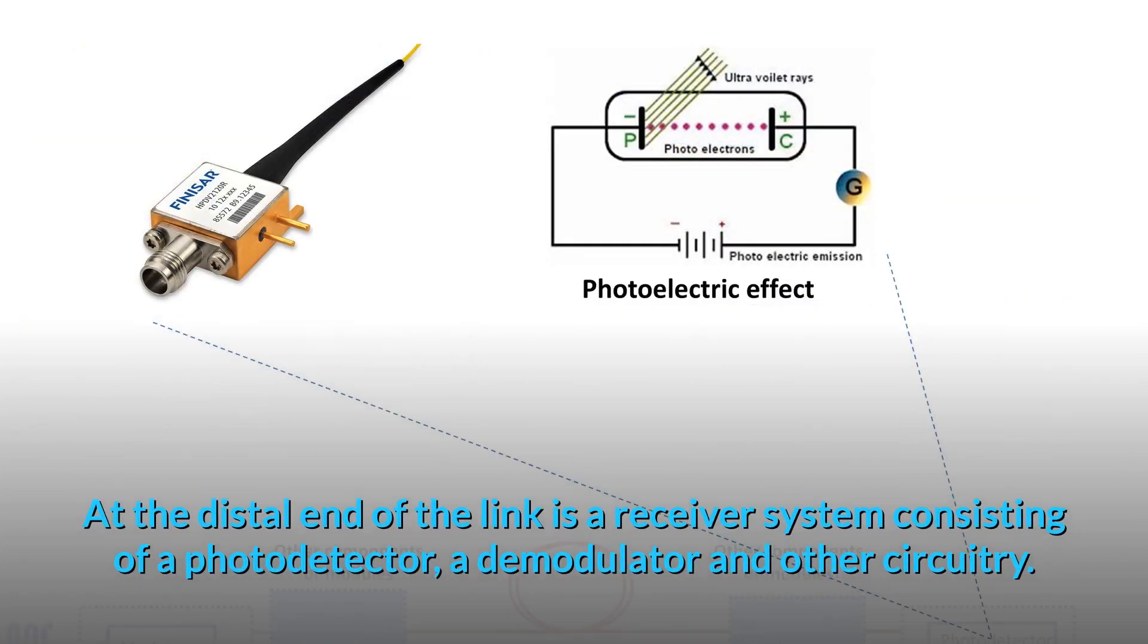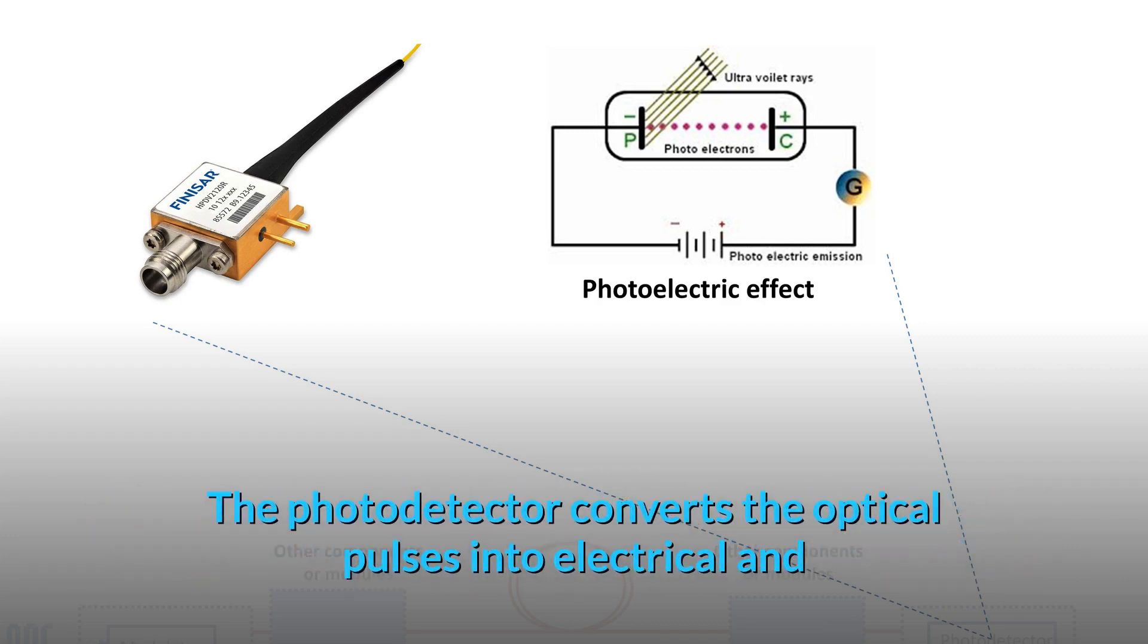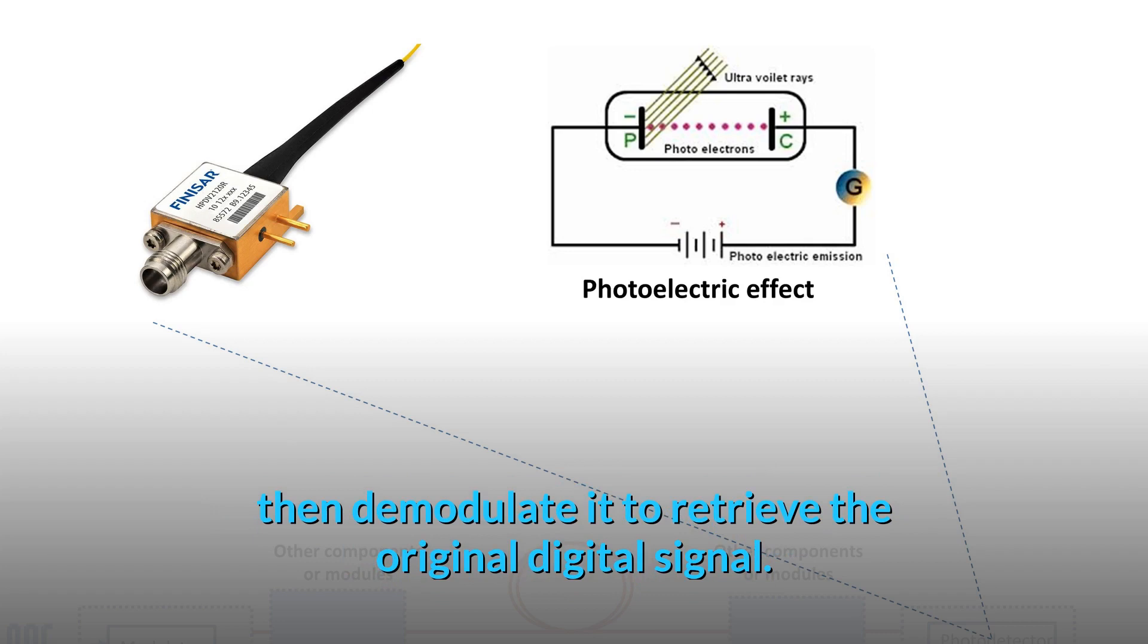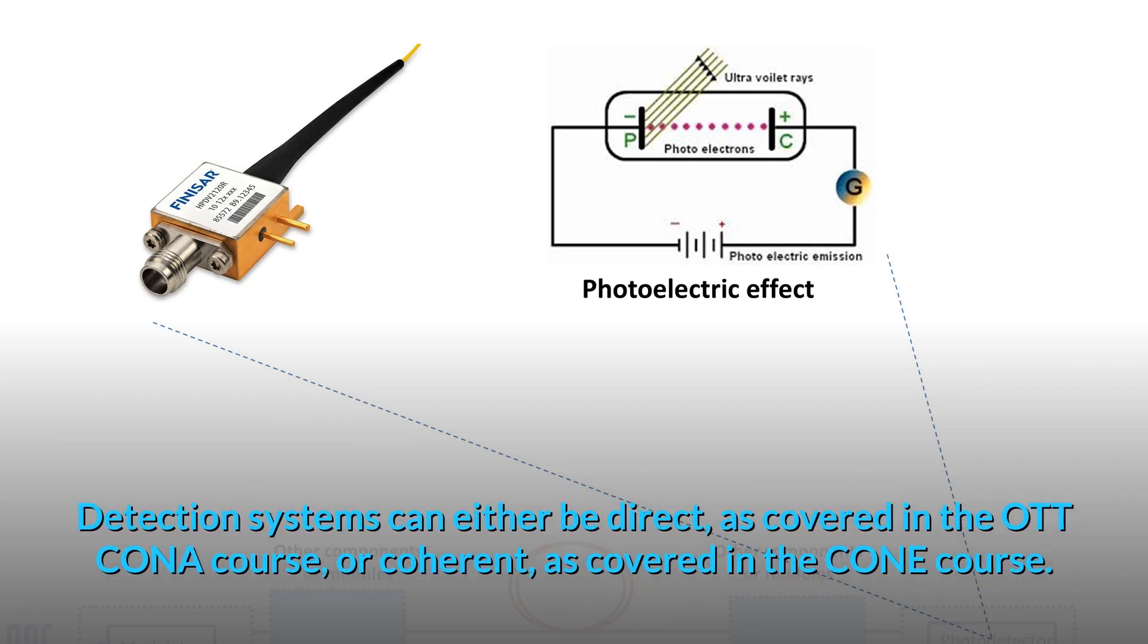At the distal end of the link is a receiver system consisting of a photodetector, a demodulator, and other circuitry. The photodetector converts the optical pulses into electrical and then demodulates it to retrieve the original digital signal. Detection systems can either be direct, as covered in the OTT Kona course, or coherent, as covered in the Kone course.